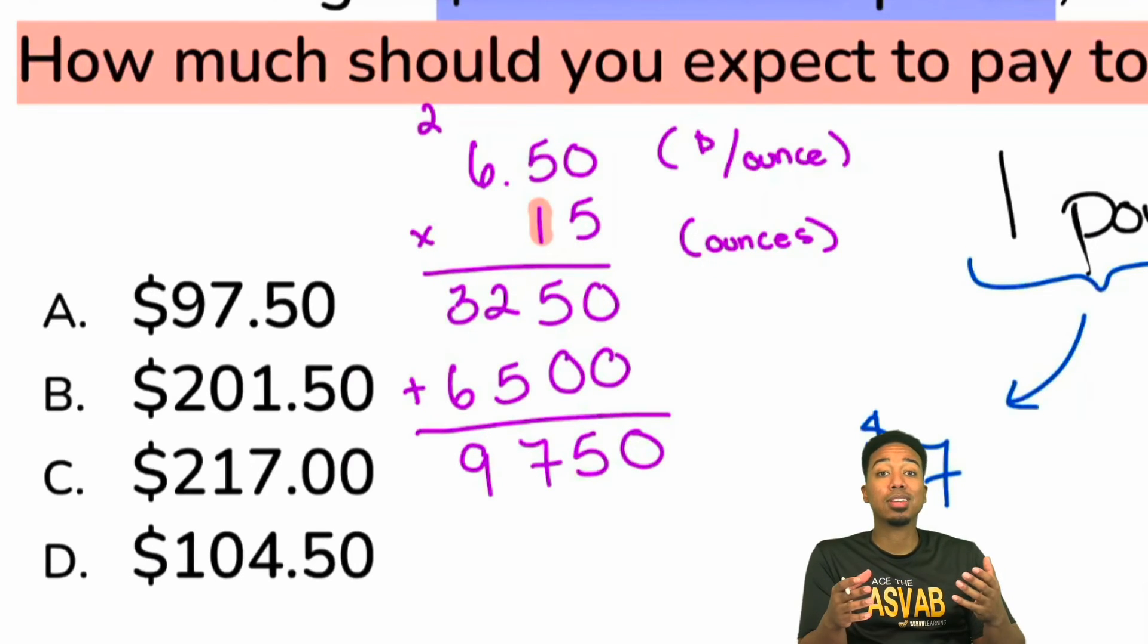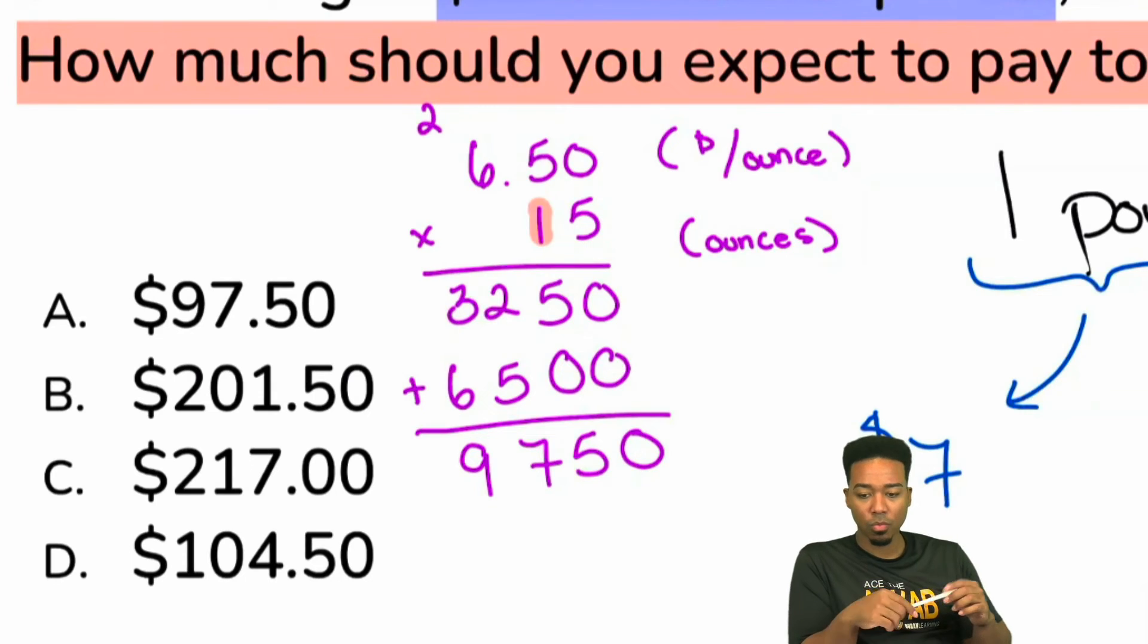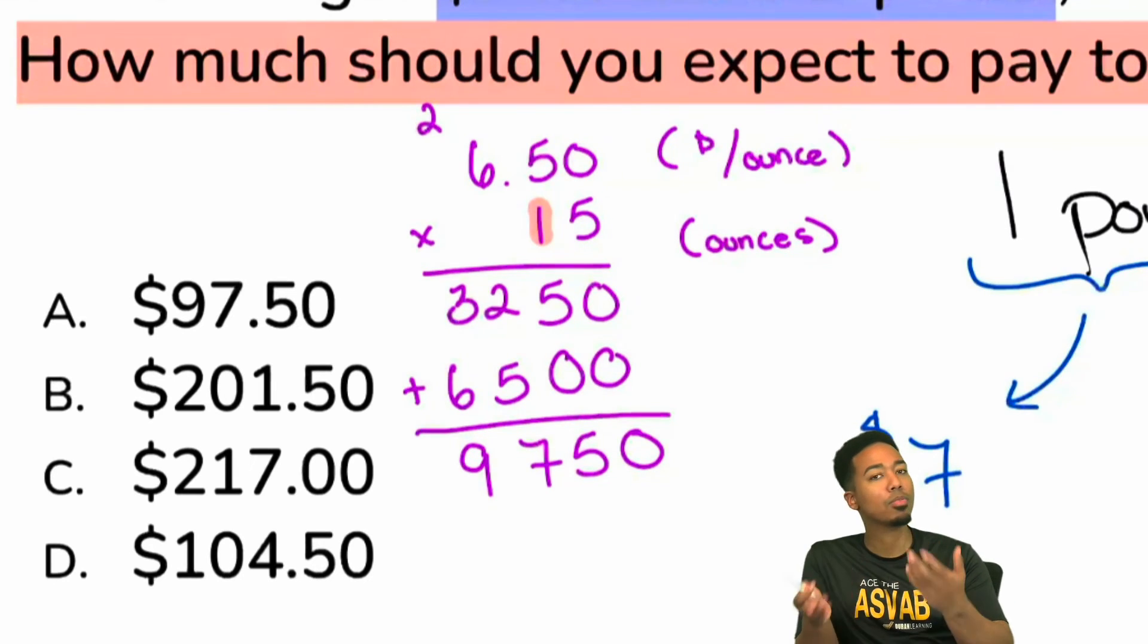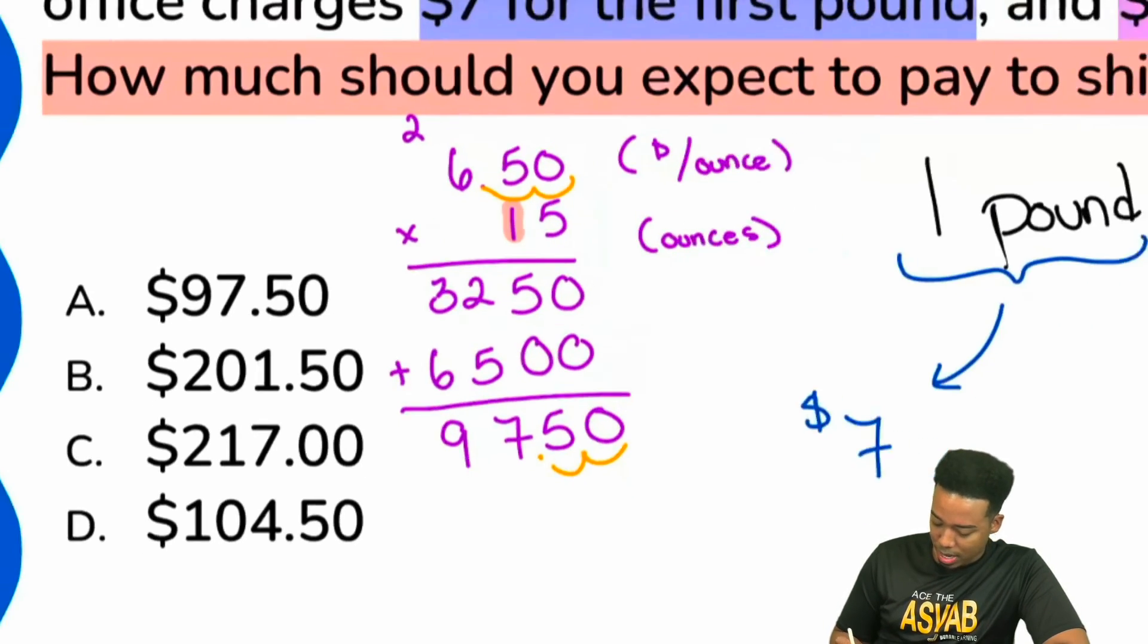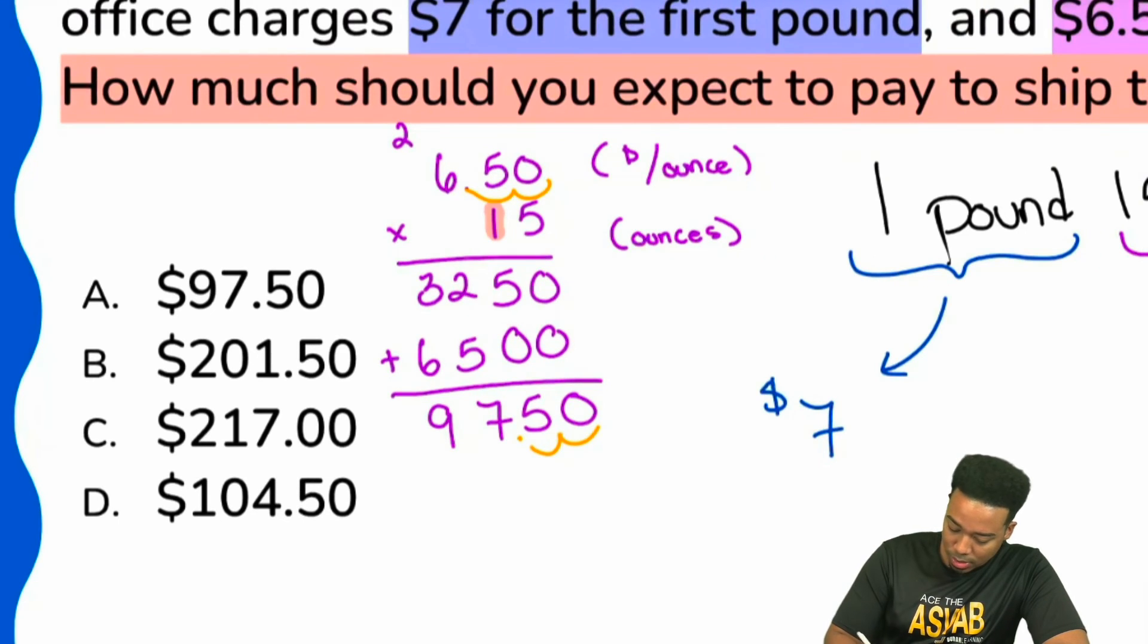So, when it comes to multiplying decimals, everybody, we ignore the decimals in the beginning. And then, what do we do at the end? Right. We simply go ahead and we bring it back. So, once we bring it back, you see here that we'll have one, two. So, one, two. Booyah. We have $97.50.